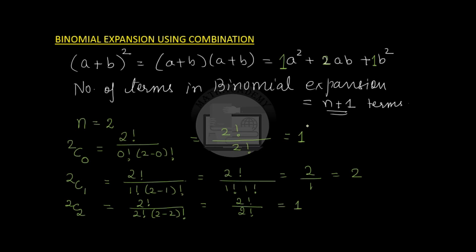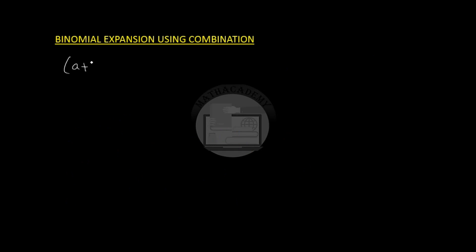So we see that 2C0, 2C1, and 2C2 are nothing but the coefficients of the terms in the expansion of (a+b)². Therefore (a+b)² can be written as 2C0·a², plus 2C1·ab, plus 2C2·b².